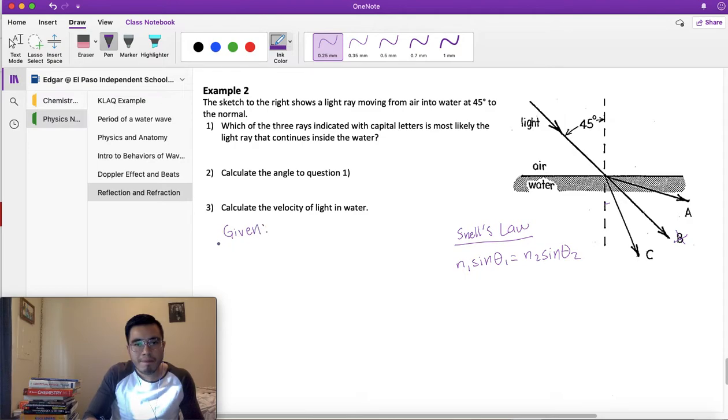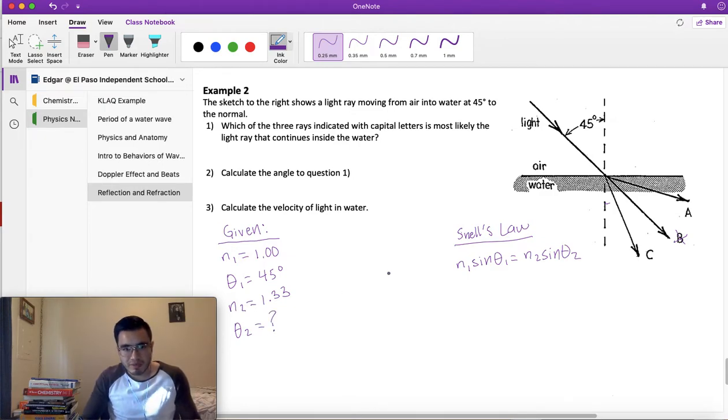So let's write our given. We have n1, index of refraction for air, 1.00. θ1, which is the incident angle, we're told is 45 degrees, so θ1 = 45°. Index of refraction for water, 1.33. We're looking for θ2, the angle of refraction.